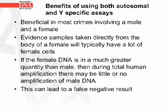Benefits of using both autosomal and Y-specific assays. When amplifying total human DNA, if there is too much of one person's DNA, it is possible for that person's DNA to mask the presence of DNA from the other individual. This is commonly seen with vaginal swabs, where the female DNA will overpower the male DNA if there are only a few cells from the male present. This can result in a single source profile or the profile from the other person being too low to be of any use.